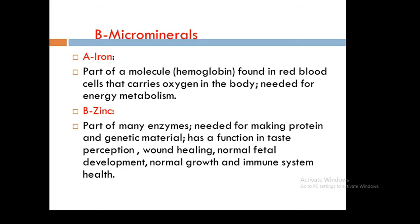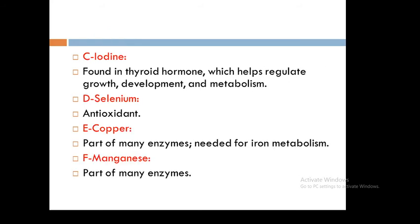Iodine is found in the thyroid hormone, which helps regulate growth, development, and metabolism. Sources of iodine include seafood, foods grown in iodine-rich soil, iodized salt, bread, and dairy products. Selenium is an antioxidant and is found in meat, seafood, and grains.